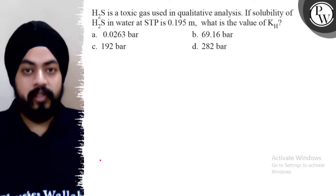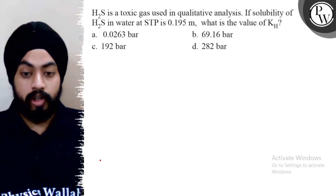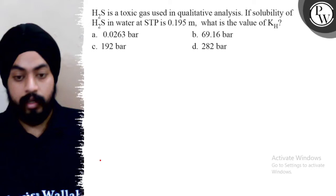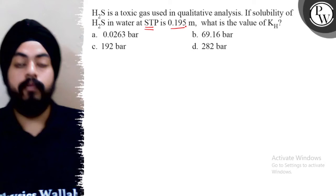Hello guys, so let's see the question. The question says H2S is a toxic gas used in qualitative analysis. If solubility of H2S in water at STP is 0.195 molal, then find the value of KH. What do we need to get out of KH?